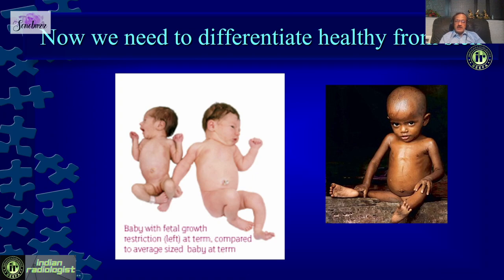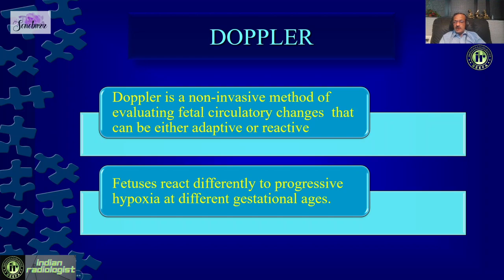Now we need to find out how well the fetus is doing inside — is it comfortable in the intrauterine environment, or is it showing signs of distress? For this we depend heavily on Doppler. We know that the fetus reacts differently to progressive hypoxia at different gestational ages. Doppler is probably the best non-invasive method to evaluate fetal circulatory changes, which can be either adaptive or reactive. On the maternal side we have uterine arteries; on the fetal side, the umbilical artery, MCA, ductus venosus, and aortic isthmus.